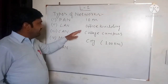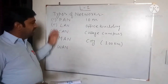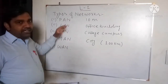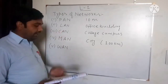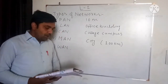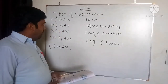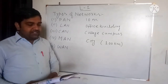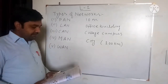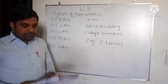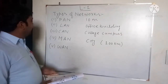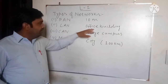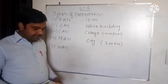Next is the Local Area Network, whose covering range is the office building — one building's entire computers can be connected to one LAN. All these networks are classified on the basis of the geographical area covered. In LAN, the range covered is one or two buildings, that is the office building.